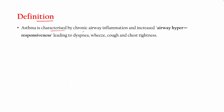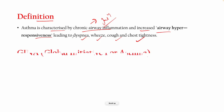Asthma is characterized by chronic airway inflammation, and the standard feature is chronic airway inflammation with increased airway hyper-responsiveness, leading to dyspnea, wheeze, cough, and chest tightness. Increased airway hyper-responsiveness is an exaggerated sensory and reflexogenic response to inhaled irritants, and those irritants lead to symptoms like dyspnea, wheeze, cough, and chest tightness.